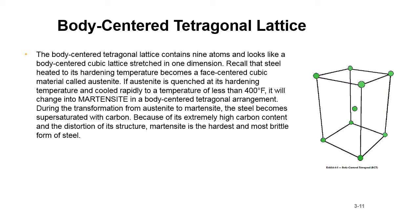If austenite is quenched at its hardening temperature and cooled rapidly to a temperature of less than 400 degrees F, it will change into martensite in a body-centered tetragonal arrangement. During the transformation from austenite to martensite, the steel becomes super saturated with carbon. Because of its extremely high carbon content and the distortion of its structure, martensite is the hardest and most brittle form of steel.